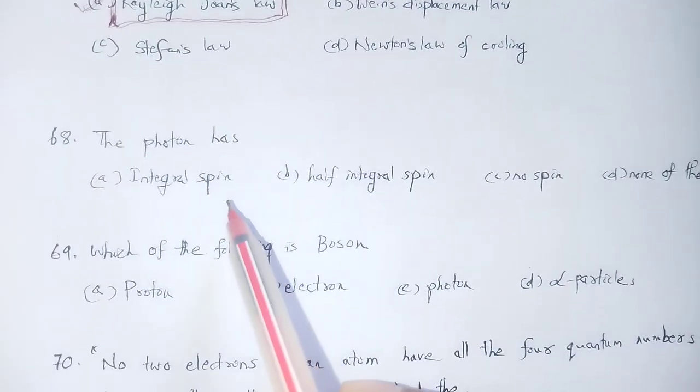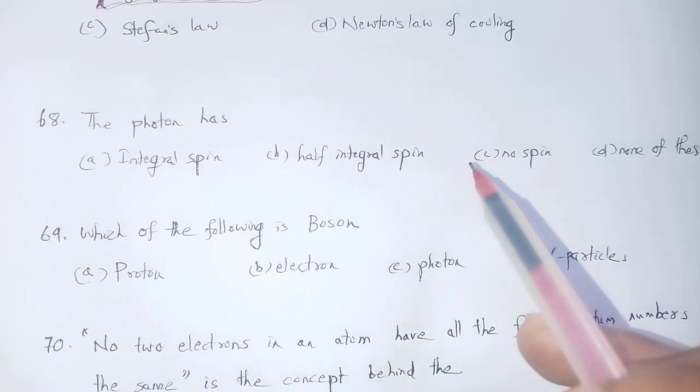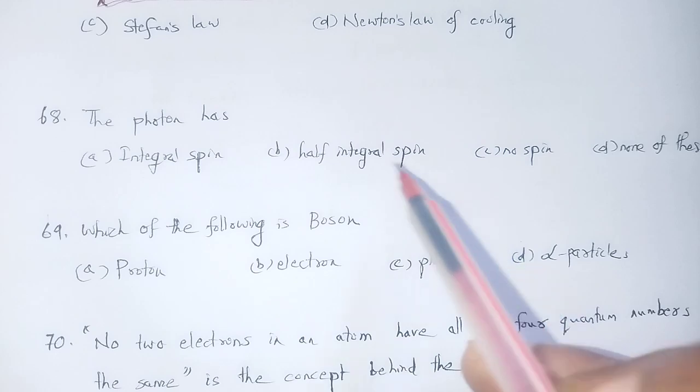Question 66: The photon has integral spin, half integral spin, or no spin? The photon is a boson with integral spin (spin = 1).